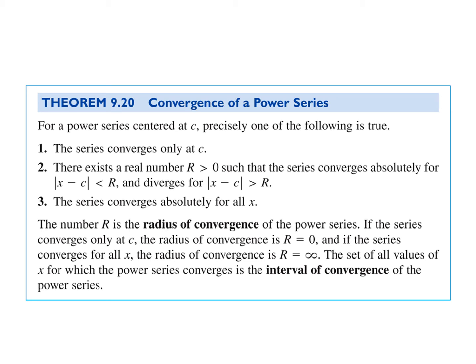A series can converge only at its center, for some interval, or for all values of X. The number R is the radius of convergence. If it converges only at a point, the radius of convergence is 0. If it converges for all real numbers, the radius of convergence is infinity. The set of all values for which X converges is called the interval of convergence.